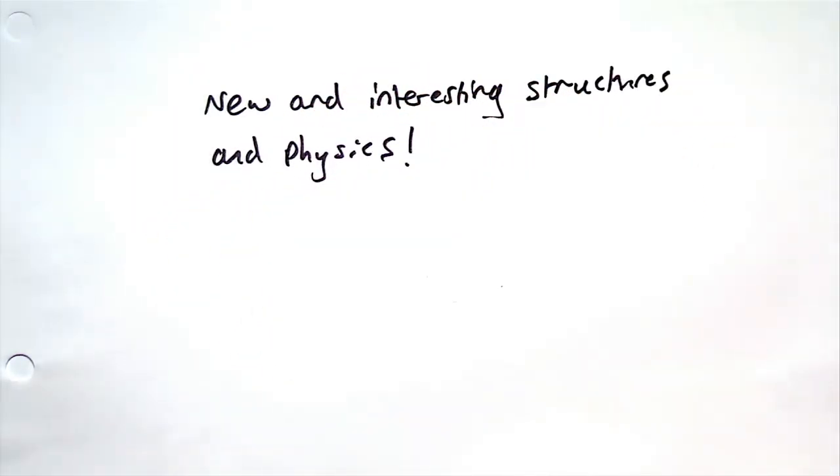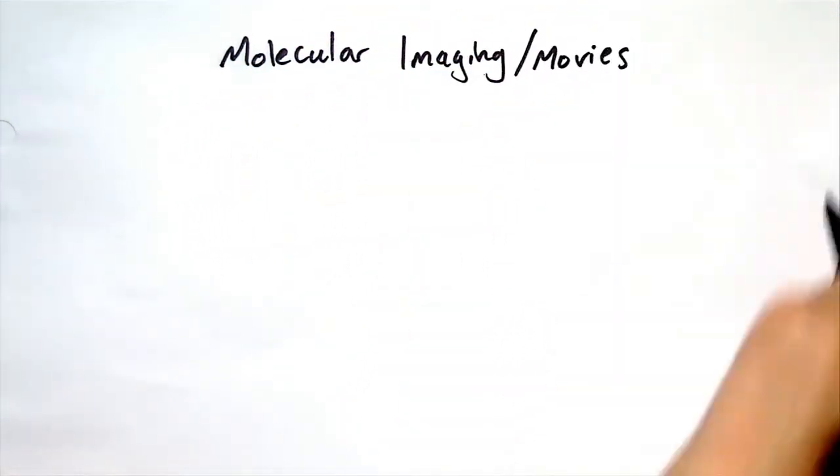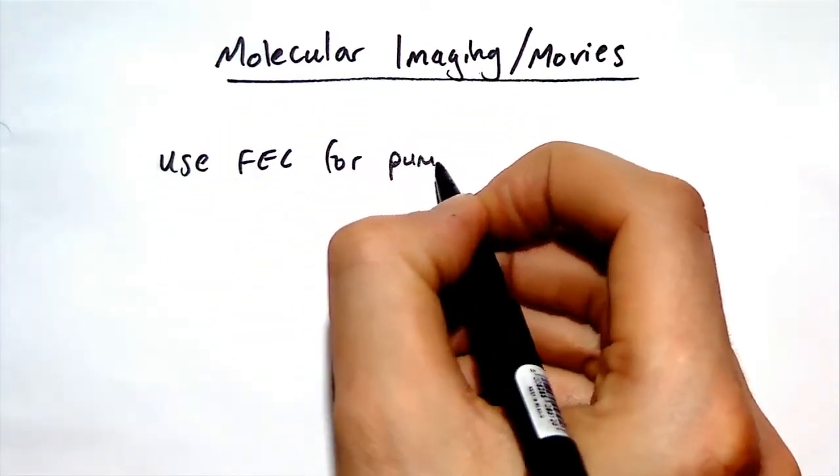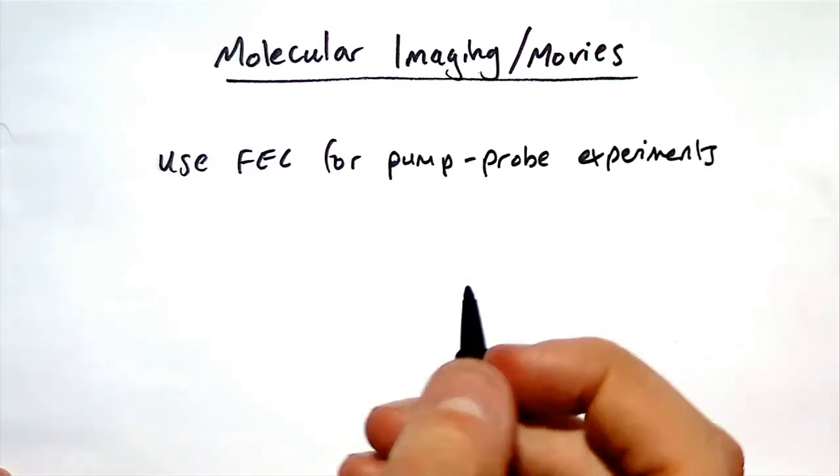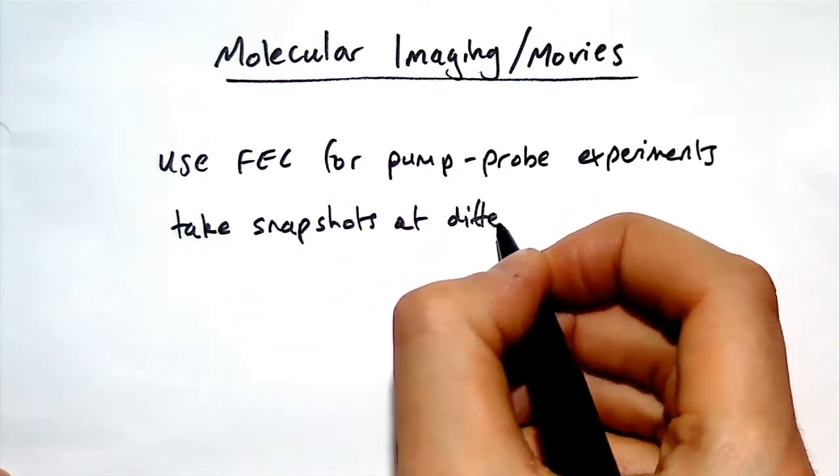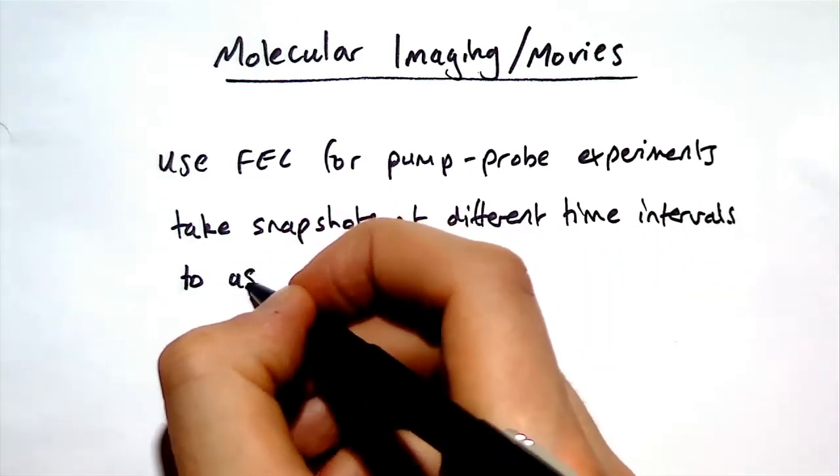We'll now look at the second application of molecular imaging. In molecular imaging, we use pump probe experiments to excite a molecule to its excited state. We use the free electron laser to take snapshots of how the structure changes with time. Assembling many of these snapshots allows us to create a molecular movie in femtosecond time resolution.